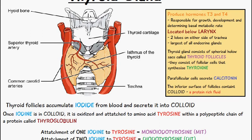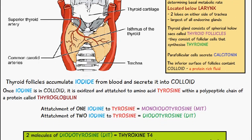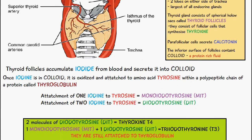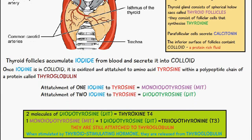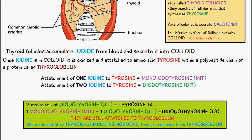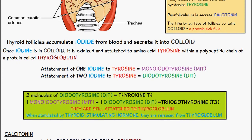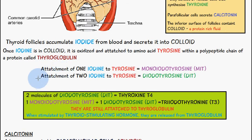The thyroid follicles accumulate iodine from the blood and secrete it into the colloid. Once iodine is in the colloid, it is oxidized and attached to the amino acid tyrosine within a polypeptide chain of a protein called thyroglobulin.